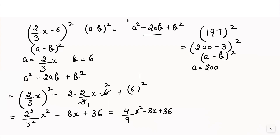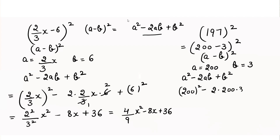Substituting the values into the formula a squared minus 2ab plus b squared, we get 200 squared minus 2 into 200 into 3 plus 3 squared. 200 squared equals 40,000. Then 2 times 200 times 3 equals 1200. And 3 squared equals 9. So we have 40,000 minus 1200 plus 9.